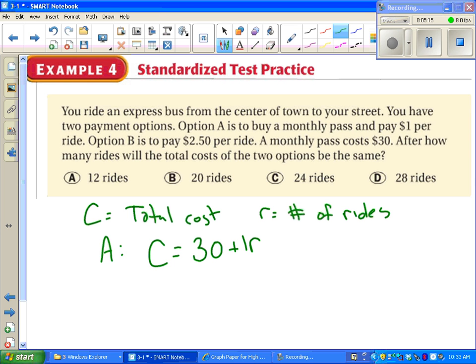Option B, we don't have to buy a monthly pass. We can just pay $2.50 per ride. Total cost would be $2.50 times the number of rides.